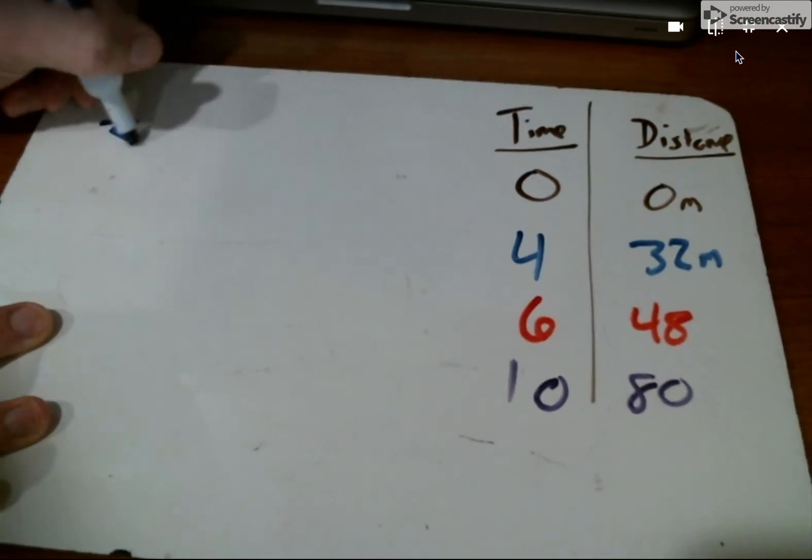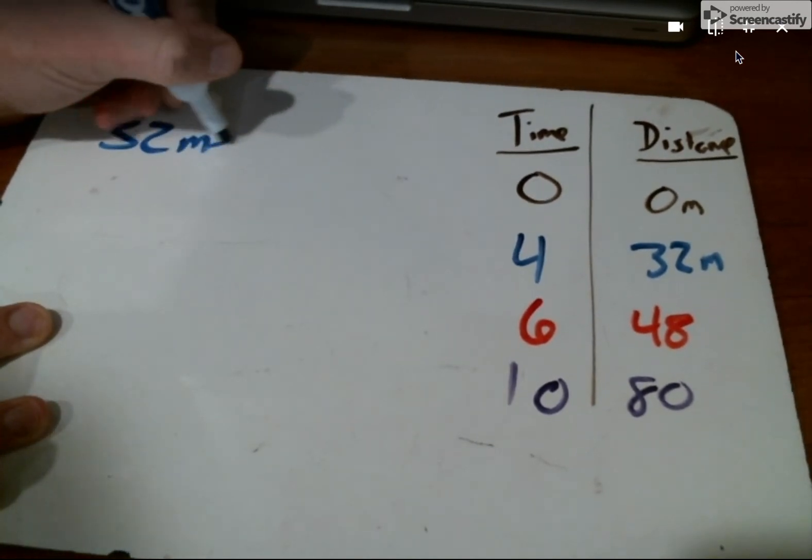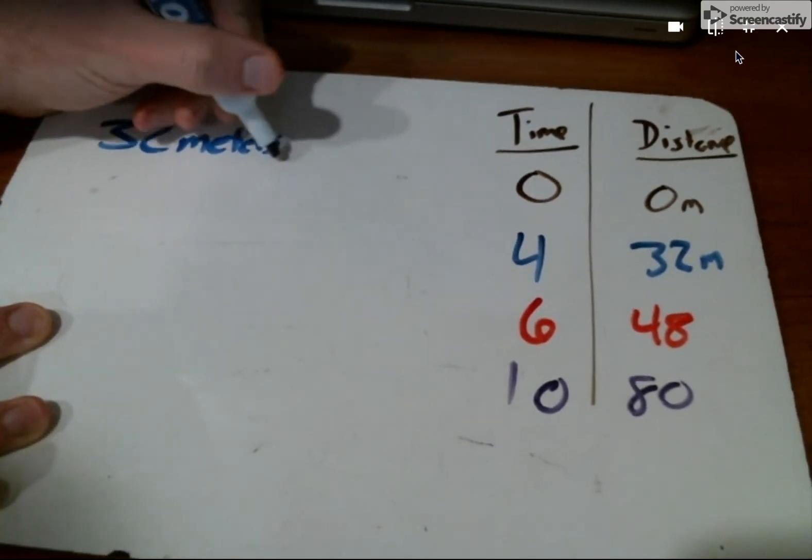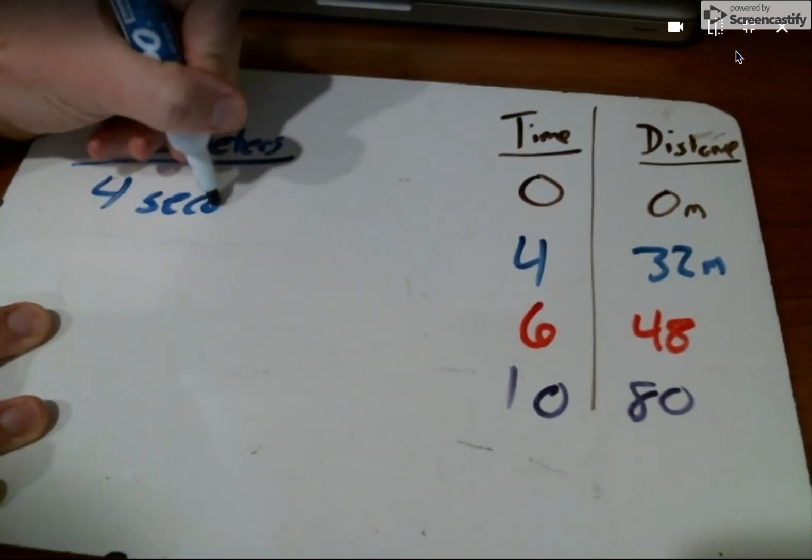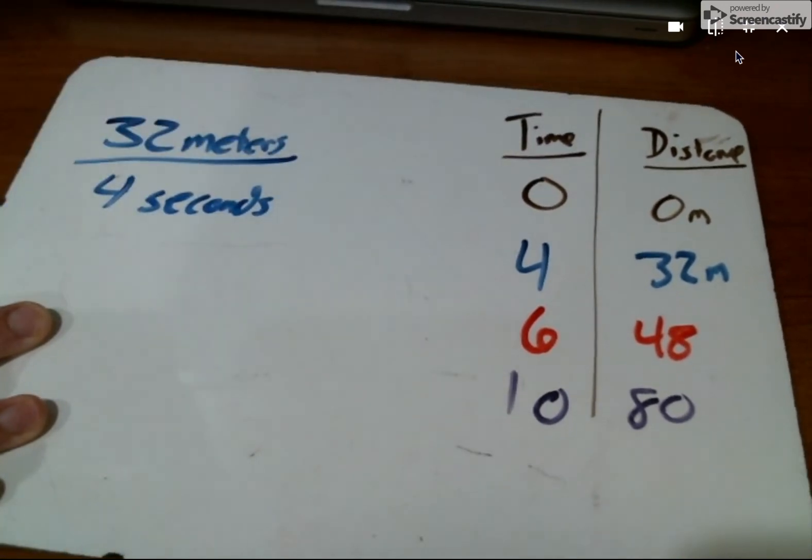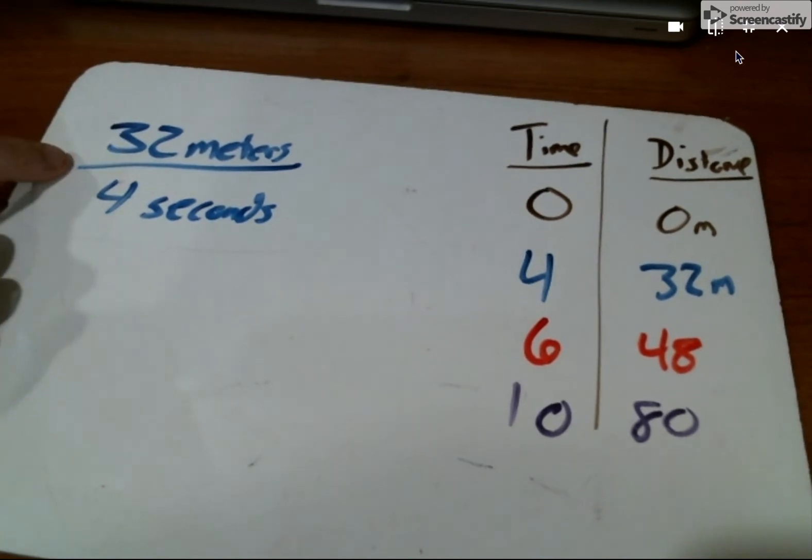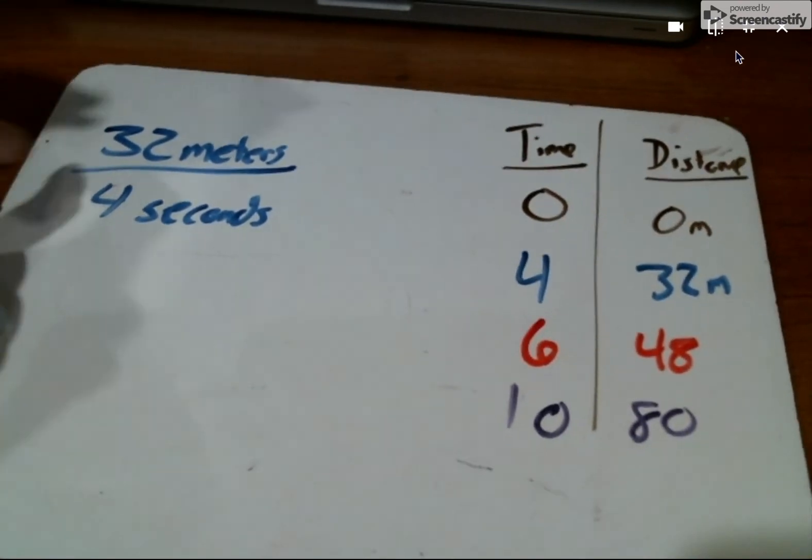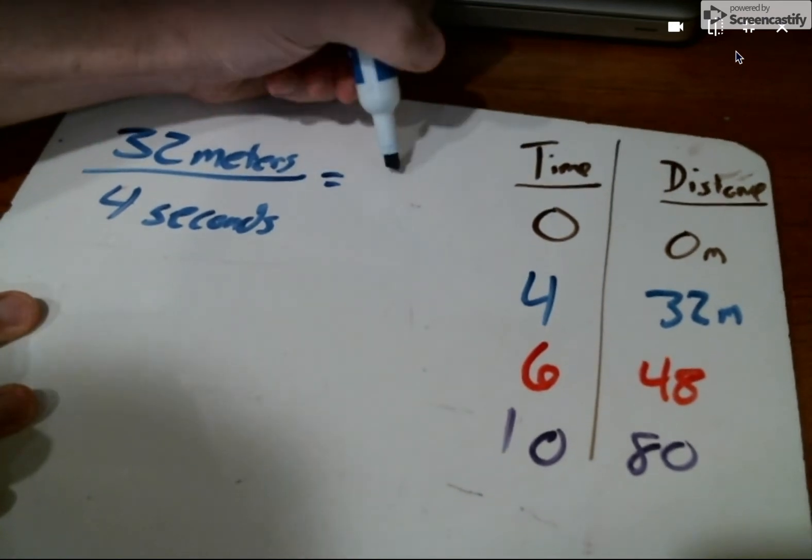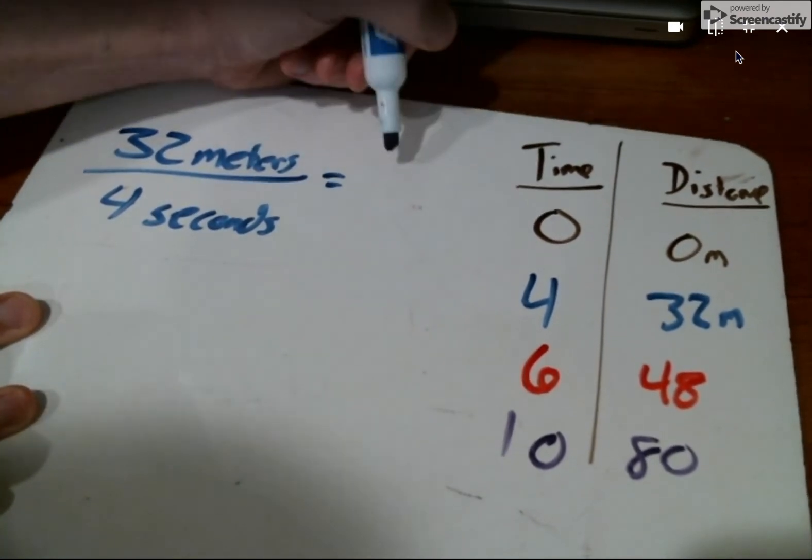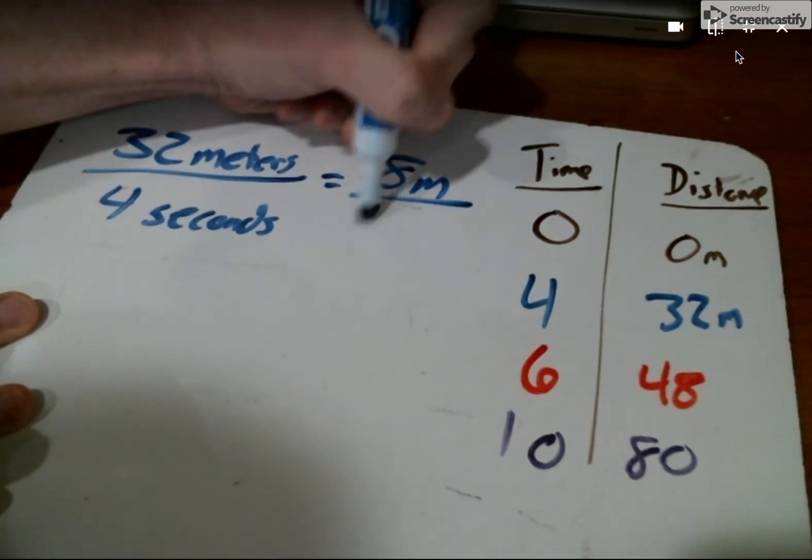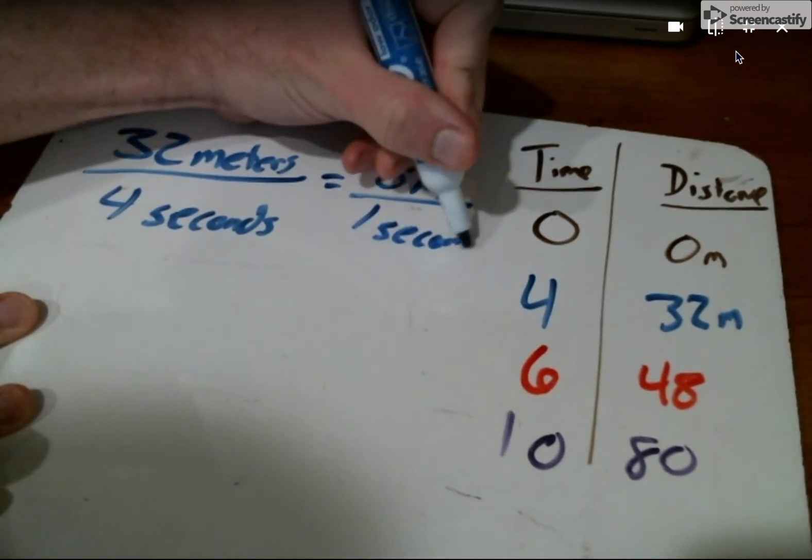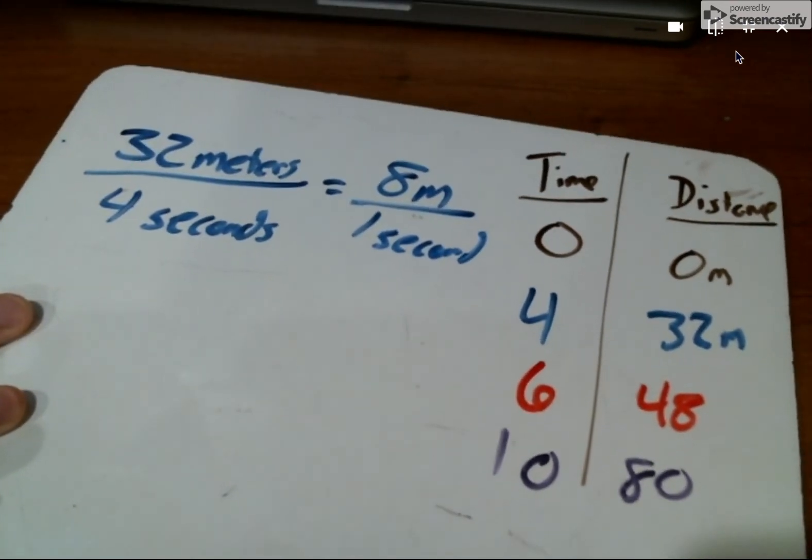The blue data point, the next row, shows us that for 32 meters of distance it took Lilo four seconds to run there. If I put that in a ratio, she runs 32 meters for a change in four seconds. We could simplify that and say that's the same thing as division or simplifying a fraction: eight meters every one second.